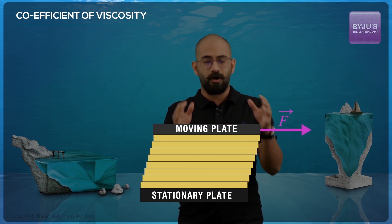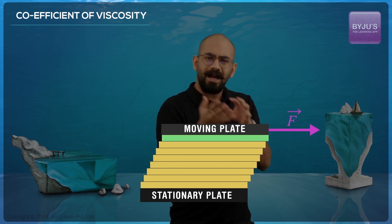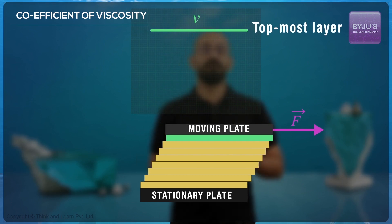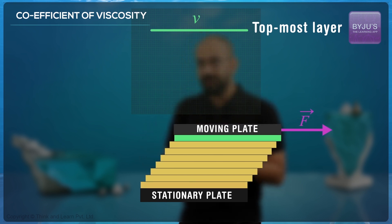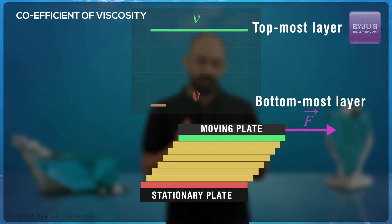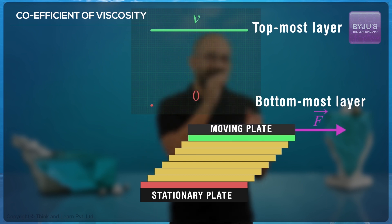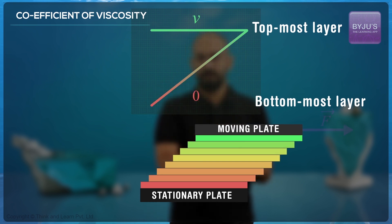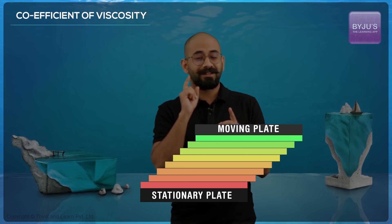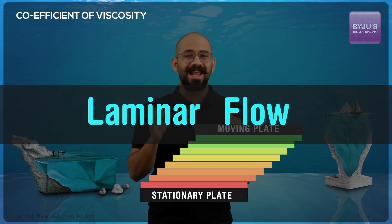What happens is the topmost layer of this fluid, which is in contact with the plate, will get dragged along at the same speed because of the viscous force between the topmost layer and the plate. Whereas the bottommost layer does not move at all because of the viscous force between the bottommost layer and the plate. And this speed reduces gradually as we move from top to bottom, perpendicular to the fluid flow, because of the viscous force between the different layers. This kind of flow, where a viscous fluid flows in parallel layers with no lateral mixing, is called laminar flow.